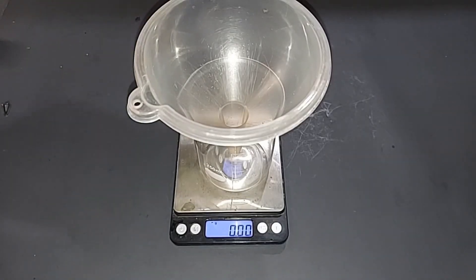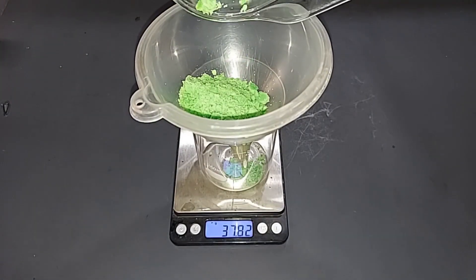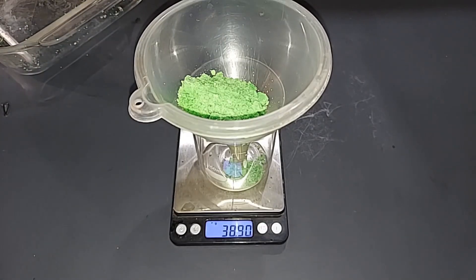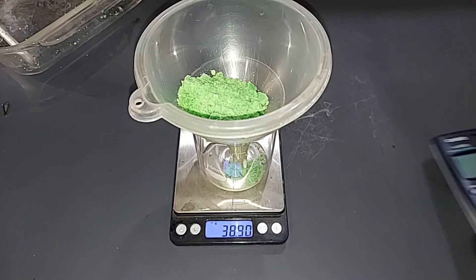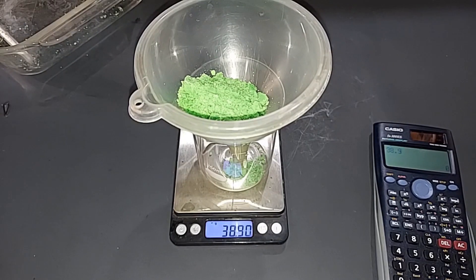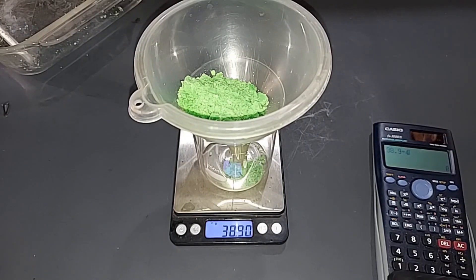Well, my goal or the yield should have been 40 grams theoretically, and we got 38.9. Let's do this really quick: 38.9 divided by 40 gives us a 97.25% yield.